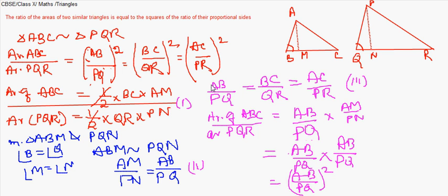We had already written AB/PQ = BC/QR = AC/PR, so the rest follows: area of ABC by area of PQR also equals (BC/QR)² and (AC/PR)². That was our theorem to be proved. From equation 3 you can derive the complete result.